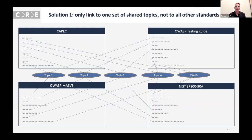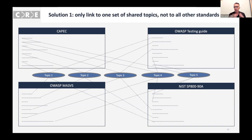So we came up with a solution: instead of linking to all other standards, why not link to shared topics? If the MASVS links to a shared topic, and the KPAC links an entry to that same topic, they are basically interrelated — but they don't have to specify each other directly. This makes linking a lot easier than having to link to all these different resources.